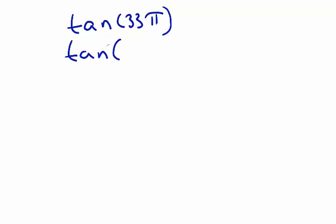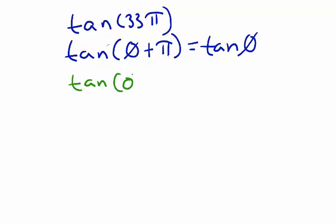So, this means tangent of some angle theta plus pi equals tangent of theta. We'll write tangent 33 pi in the form tangent theta plus pi times k, where k is our largest possible integer. In other words, tangent 0 plus pi times 33.